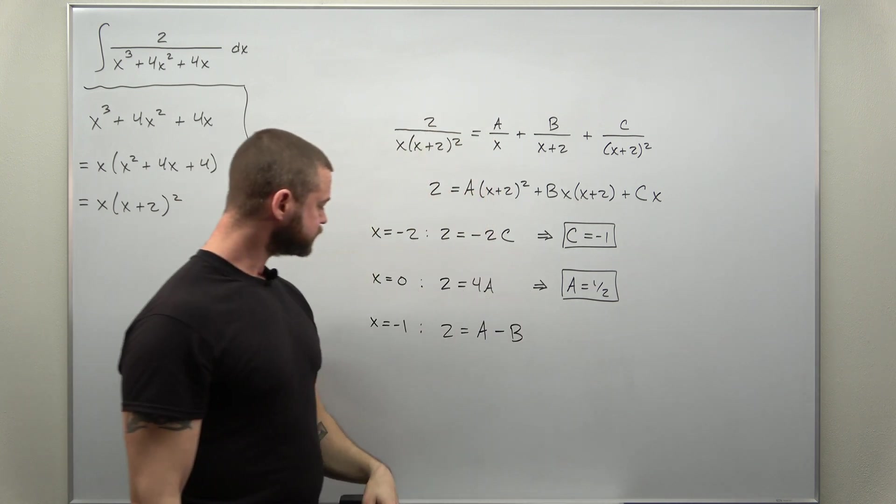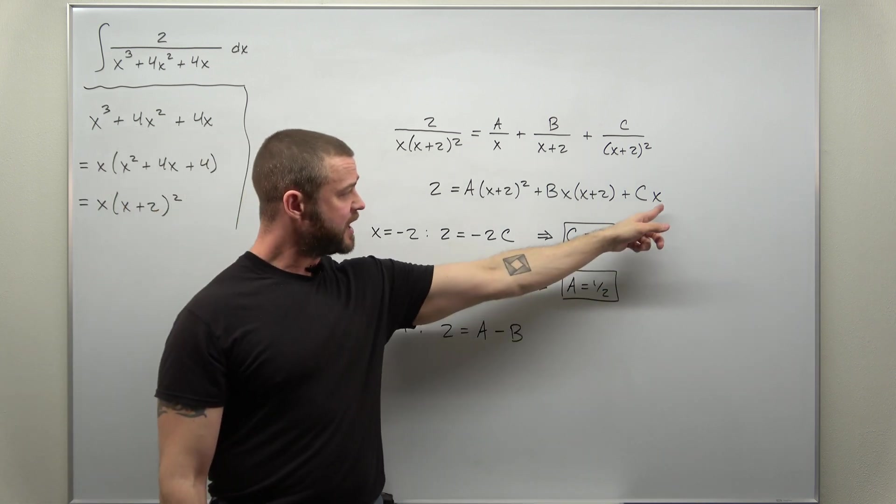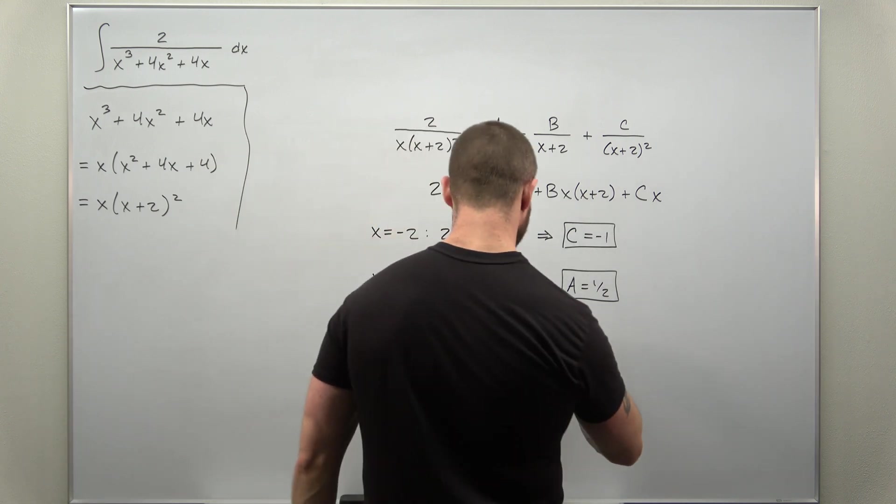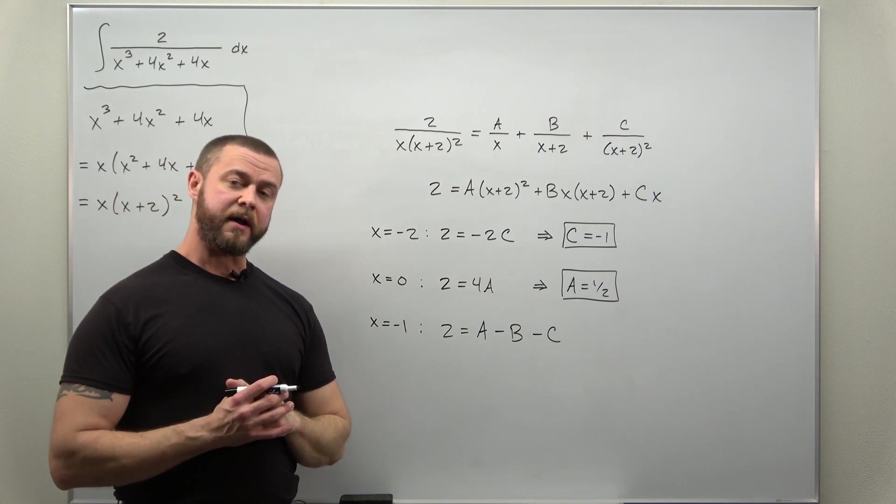So write that as minus b. And again, just be careful with your signs. When x is negative 1, this part turns to minus c.